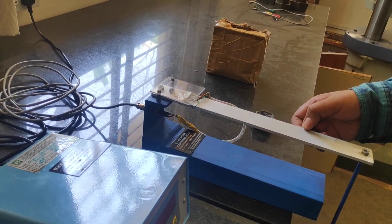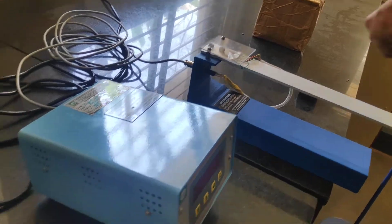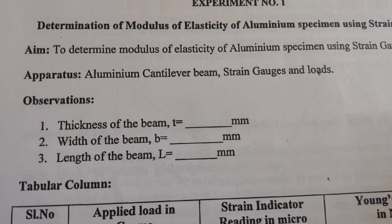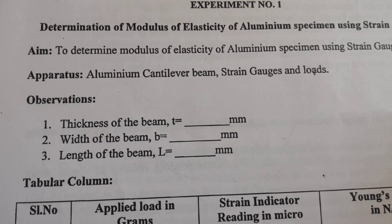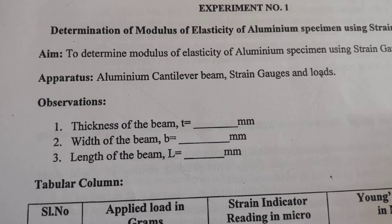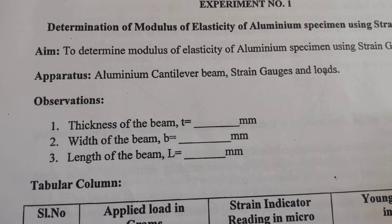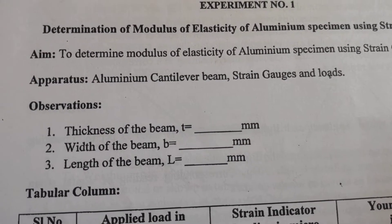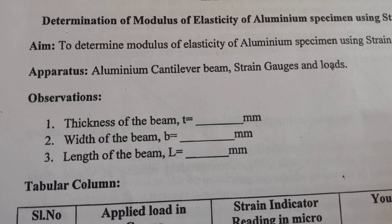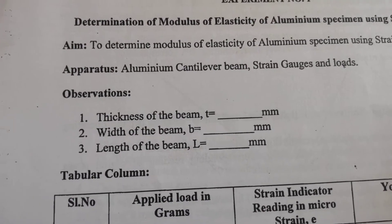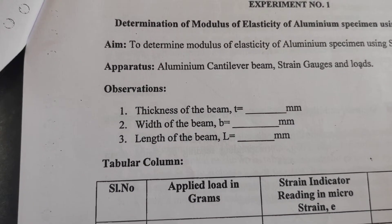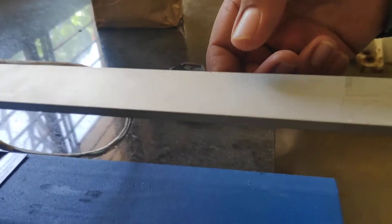The initial observation of this experiment is: thickness of the beam, t, is 49 mm; width of the beam is 380 mm; and the length of the beam is 300 mm. You have to measure and take these dimensions of the beam.